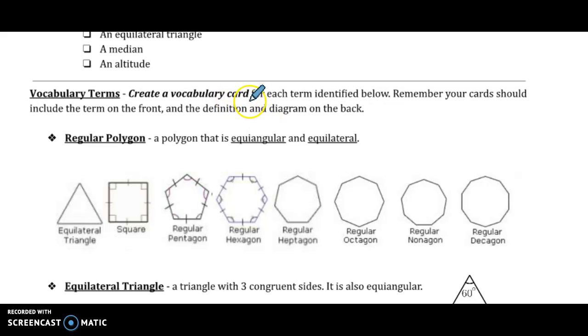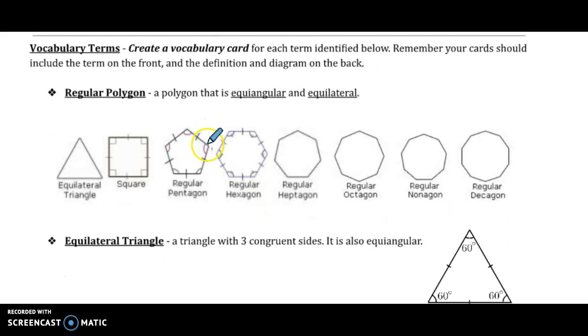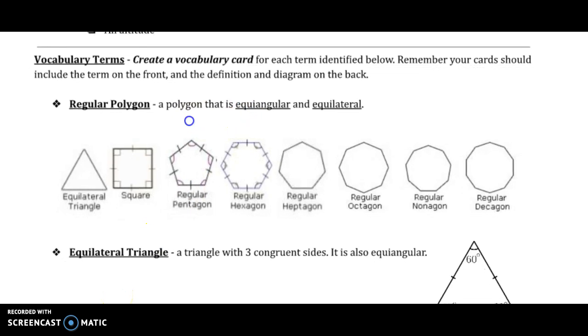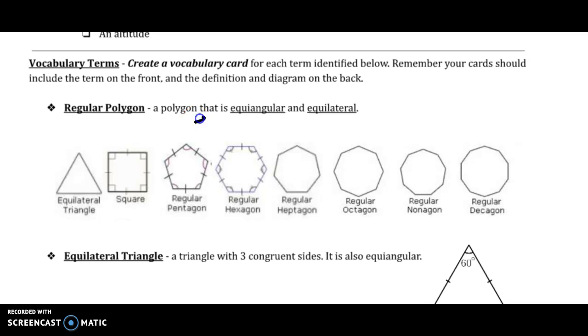You should create a vocabulary card for each of the terms identified below. You need to know what a regular polygon is. That is a polygon that is equiangular and equilateral. Equiangular means equal angles or congruent angles, and equilateral means equal sides or congruent sides.